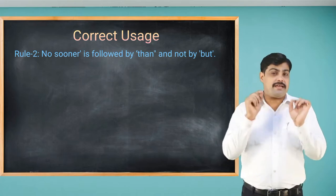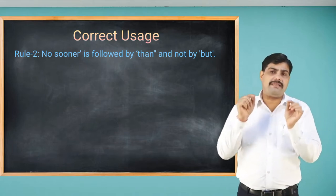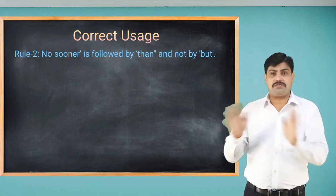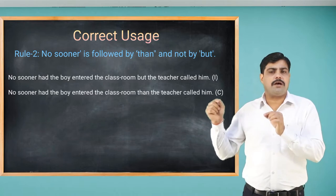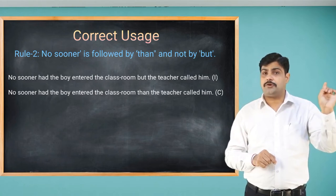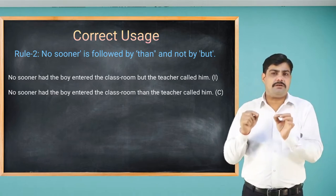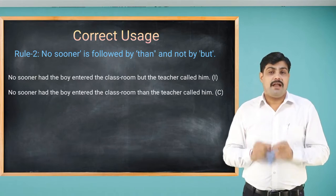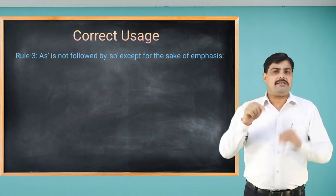Rule number two: 'no sooner' is followed by 'than', and not by 'but'. This is very important. For example, the incorrect sentence: 'No sooner had the boy entered the classroom but the teacher called him.' Since 'no sooner' is at the beginning, we must use 'than' in the second clause. The correct sentence is: 'No sooner had the boy entered the classroom than the teacher called him.'